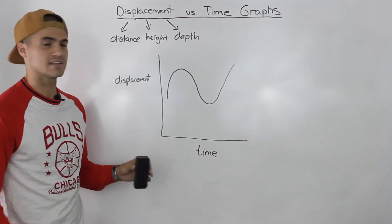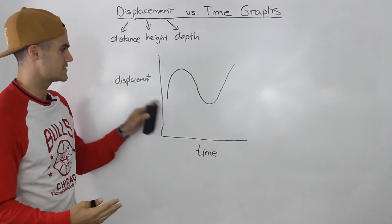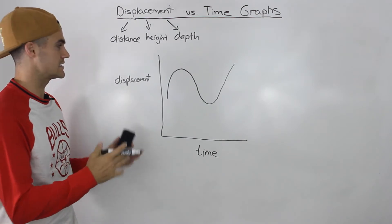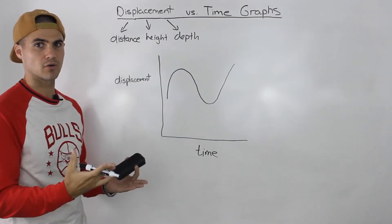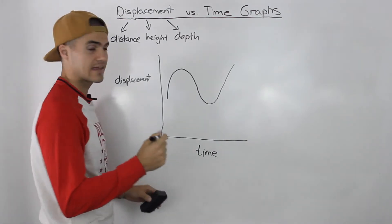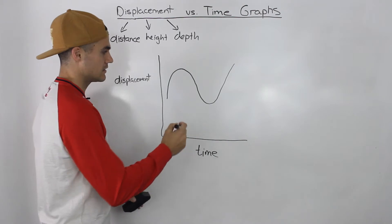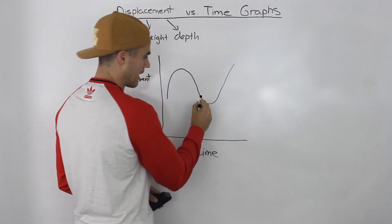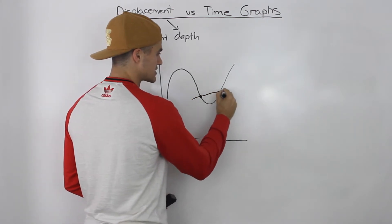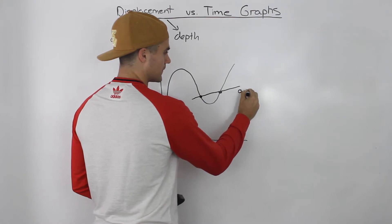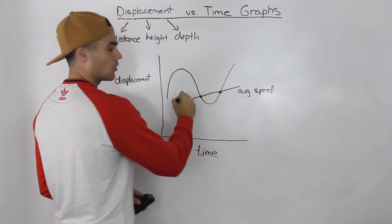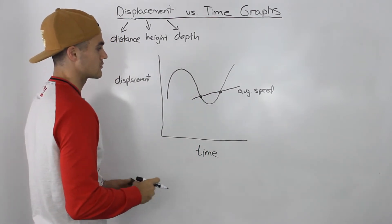Second thing: you can always calculate the speed of an object from its displacement versus time graph. Because speed is basically distance over time, or more generally, displacement over time. So you can calculate the average speed of an object. If you're calculating the average speed between two different times, it's going to be the slope of the secant. You'd calculate the slope of that line and get your average speed.